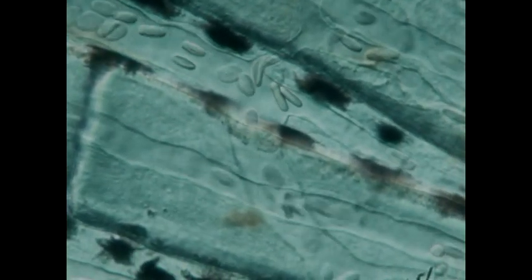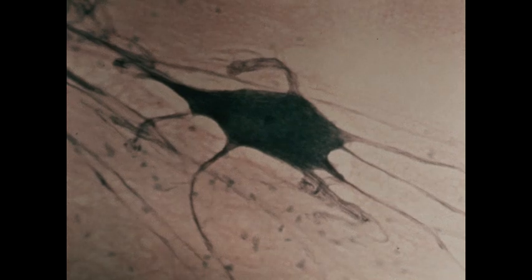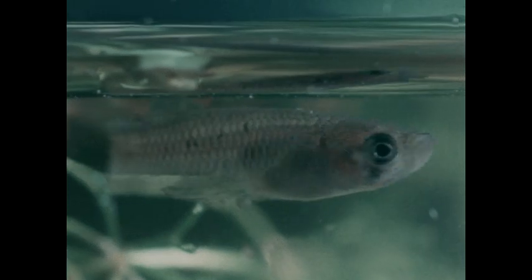So plastids and cell walls distinguish plant cells from animal cells. But animals have more kinds of specialized cells, like blood cells, bone cells, muscle cells, nerve cells, liver cells, skin cells, over 200 kinds of cells in a vertebrate animal.